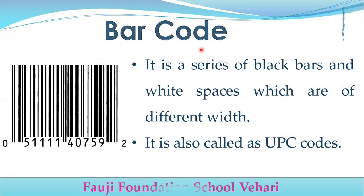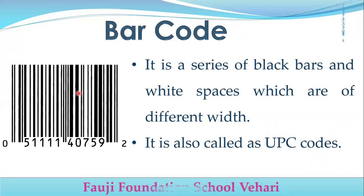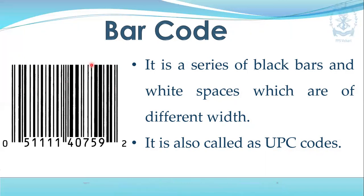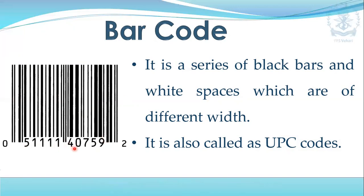Barcode: it is a series of black bars and white spaces which are of different widths. It is also called a UPC code. These are black bars of different widths and white spaces. If you want to see a barcode, you can look on the back of a biscuit packet, snacks, or any product at a shop — you will see lines and a code. That is a barcode.